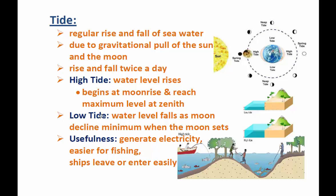There are two types of tides: high tide and low tide. When the water level rises to the surface of the coastal region, that is what we call a high tide. It begins at moonrise — when the moon rises, the high tide starts, and as the moon continues to rise and reaches its zenith, the tide also reaches its maximum level. In a low tide, water levels fall as the moon declines.